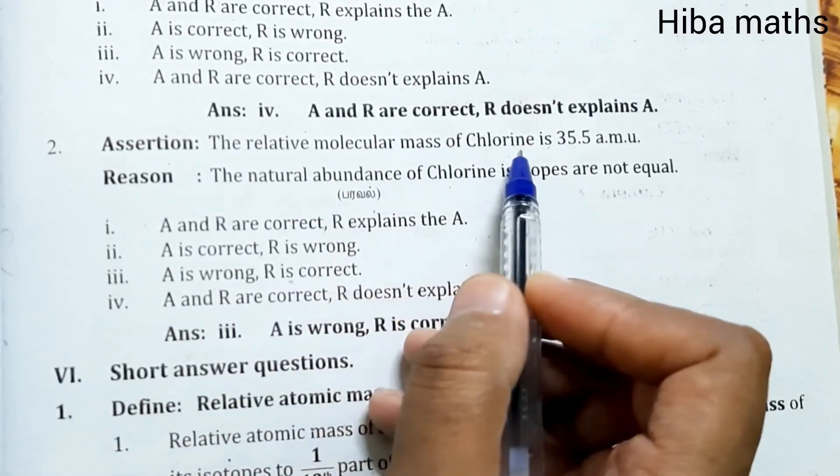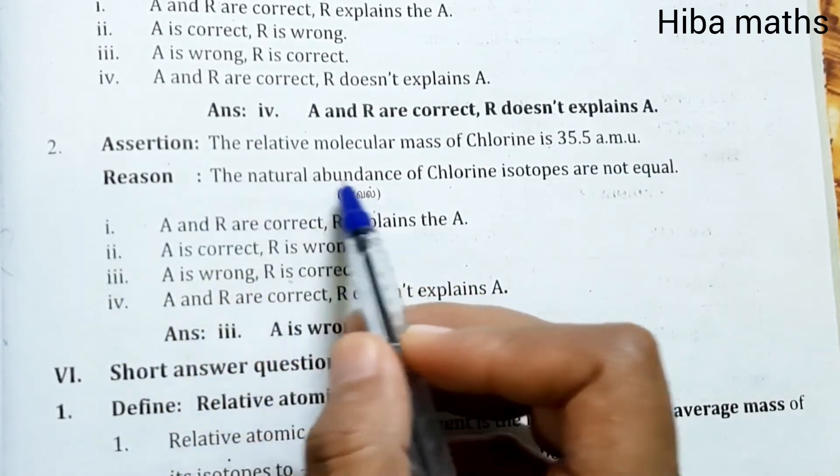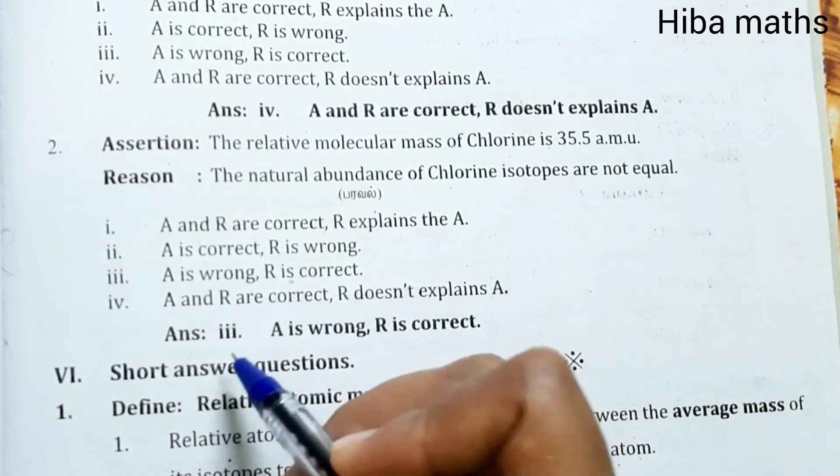Second question. Assertion: The relative molecular mass of chlorine is 35.5 amu. Reason: The natural abundance of chlorine isotopes are not equal. Answer: Third option - A is wrong and R is correct.